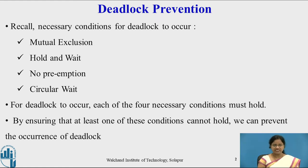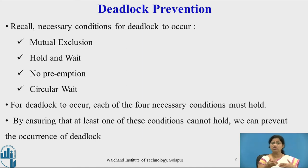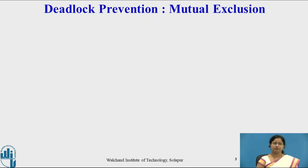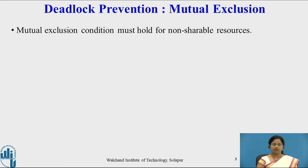We will now study all four conditions in detail, considering how each condition can be prevented from occurring in the system. If one of the conditions is not present, then deadlock will never occur. The first condition is mutual exclusion.